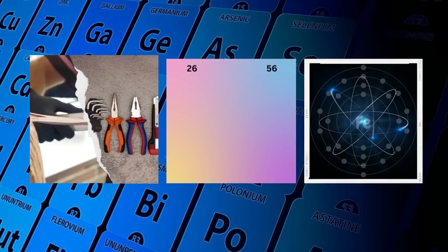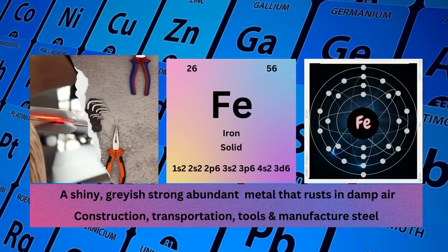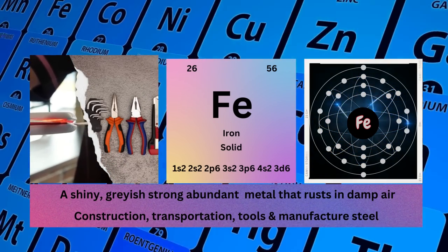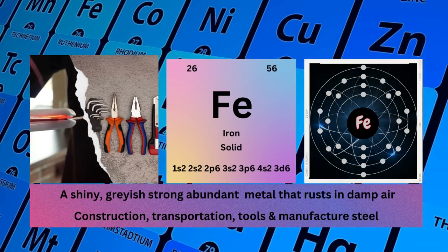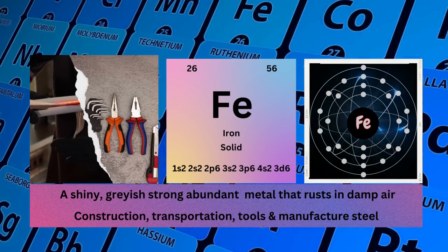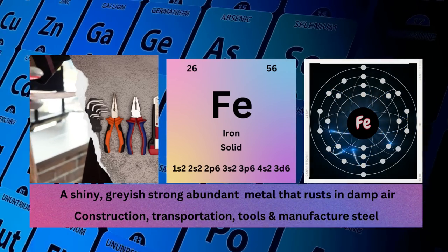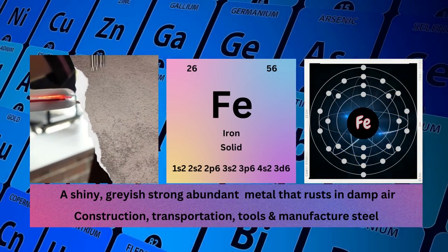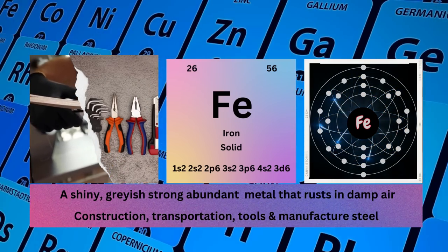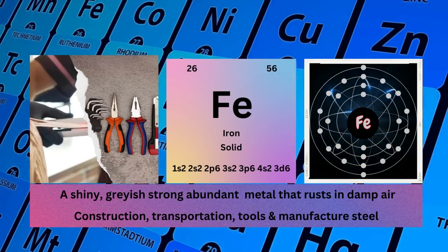Iron. Atomic No. 26. Mass No. 56. Symbol Fe. State Solid. Electronic Configuration 1S2 2S2 2P6 3S2 3P6 4S2 3D6. Physical Properties: A Shiny, Grayish, Strong, Abundant Metal that Rusts in Damp Air. Iron is used for construction, transportation, tools, and to manufacture steel.